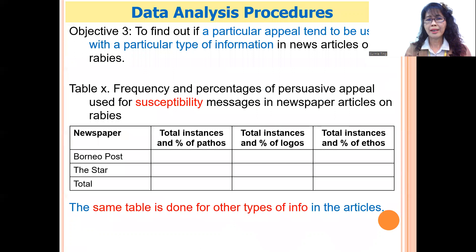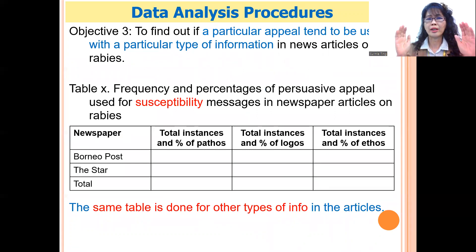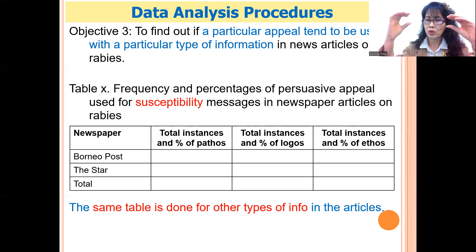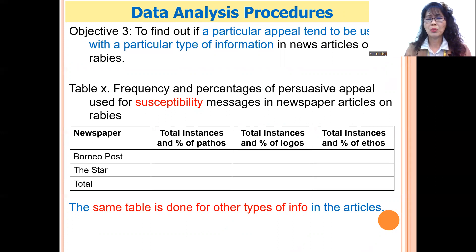Finally, for objective three, I needed to look at both the kinds of information and the rhetorical appeal together. I wanted to know: if a part of an article is about risk, is it logos, pathos, or ethos? With that, I can determine which appeal goes with which kind of information.